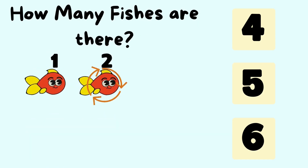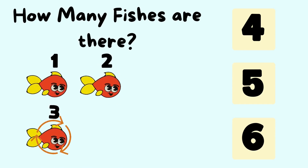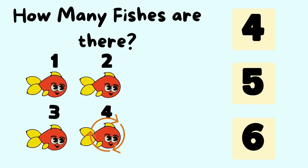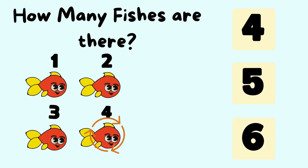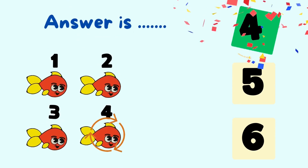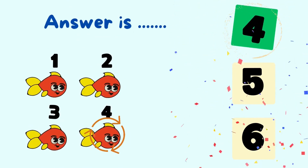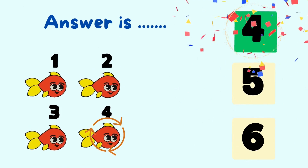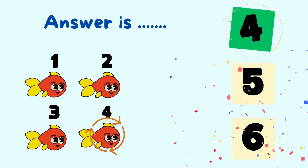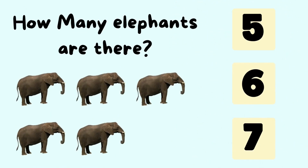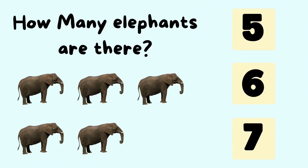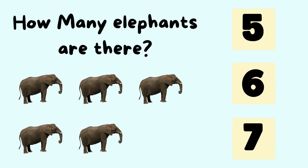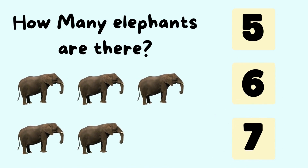How many fishes are there? Let's count the number of fishes. It is one, two, three, four fishes. So the answer is four fishes.